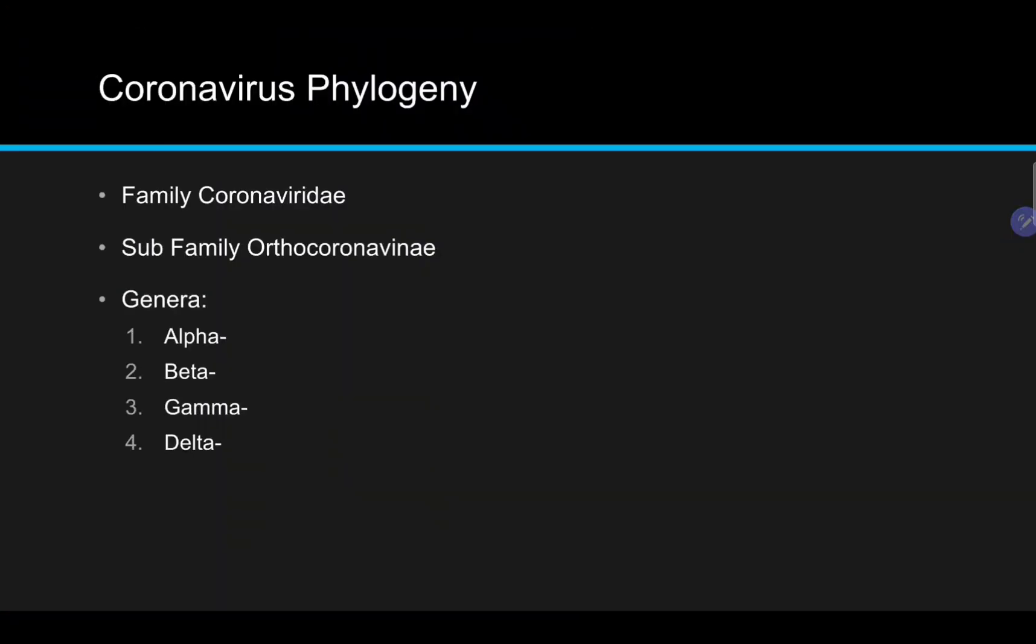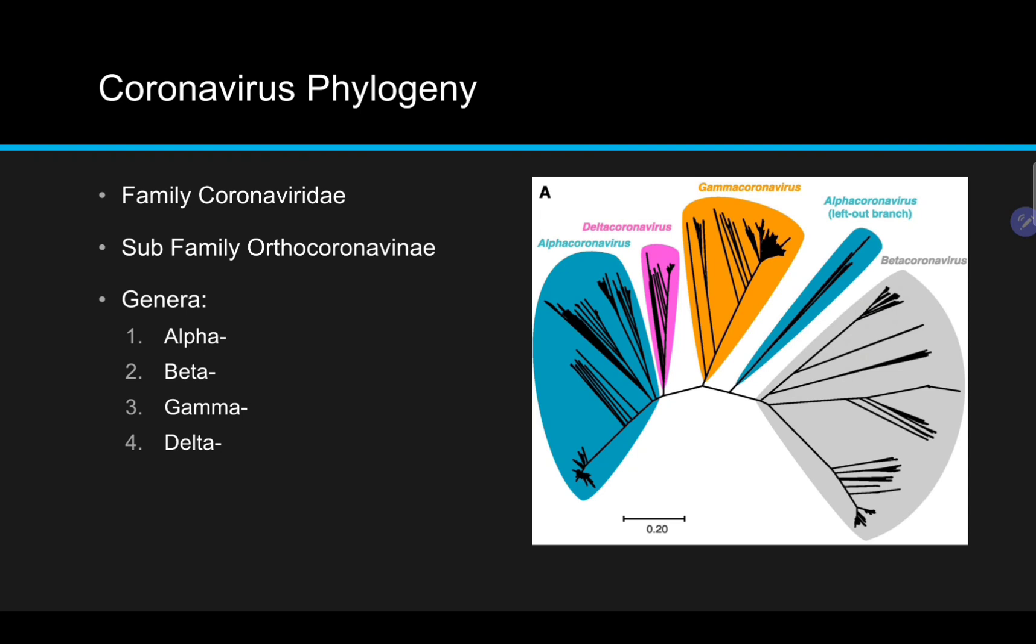So, the first thing we're going to examine is the Coronaviridae family. More specifically, the subfamily Orthocoronavirinae, which has four genera: alpha, beta, gamma, and delta. The alpha and beta genera infect only mammals, while the gamma and delta infect primarily birds.